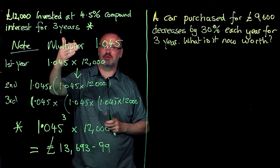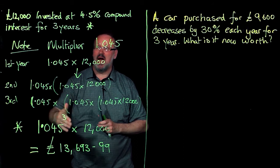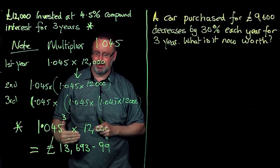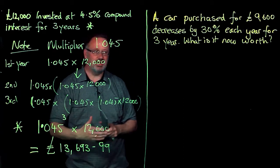So to summarise, find your multiplier, number of years that we're having our investment for times our principal sum at the start, then get the calculator.